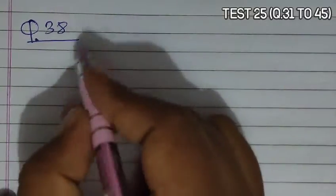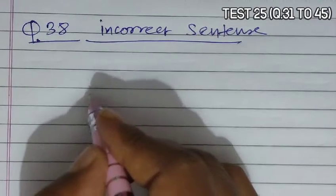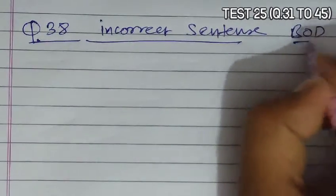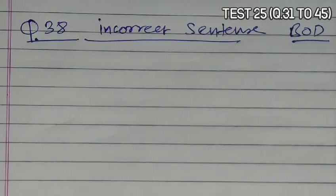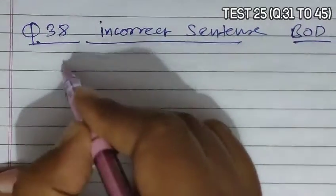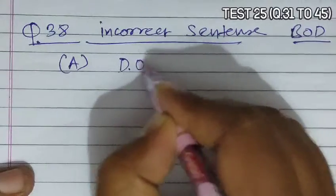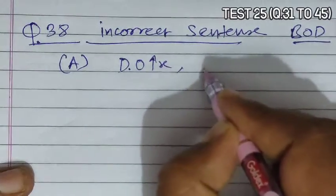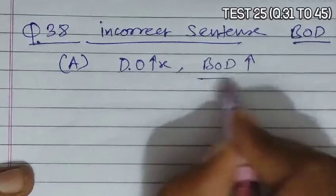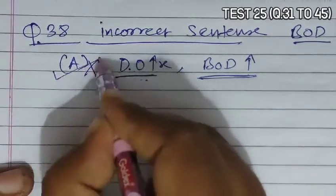Question 38 asks to choose the incorrect sentence about BOD. BOD is the amount of extra oxygen needed to break down organic matter, and BOD increases when dissolved oxygen decreases. The incorrect statement is option A, which incorrectly states the relationship between BOD and dissolved oxygen.